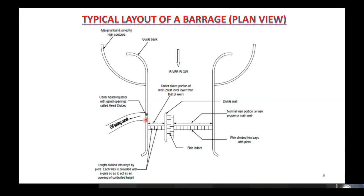This structure where we provide gates to regulate the flow to the canal is known as the head regulator of the main canal. These are the marginal bonds — this one is the right marginal bond and this is the left marginal bond. This is the fish ladder, and this wall is called the divide wall.